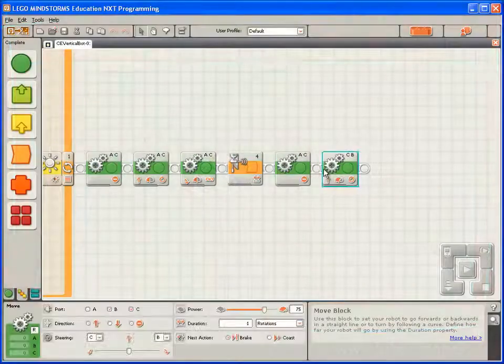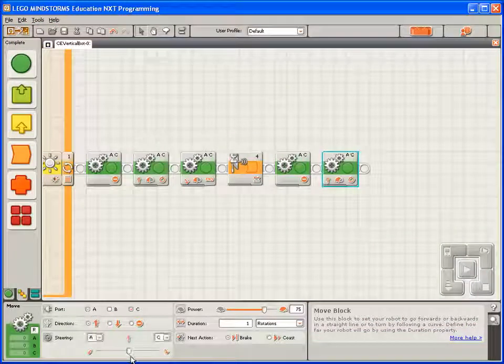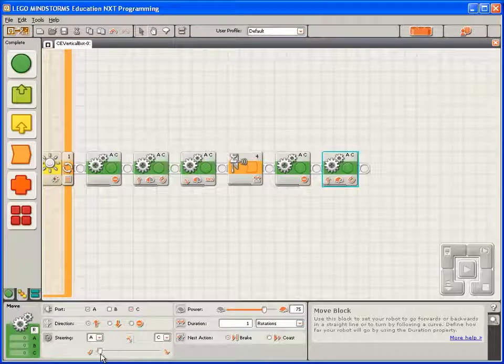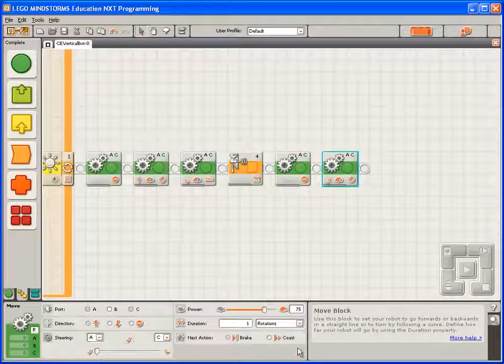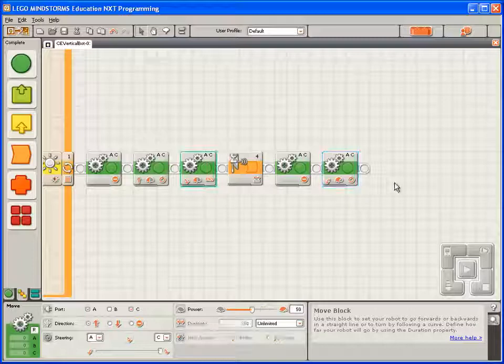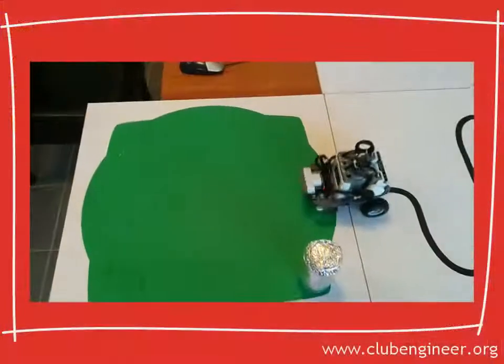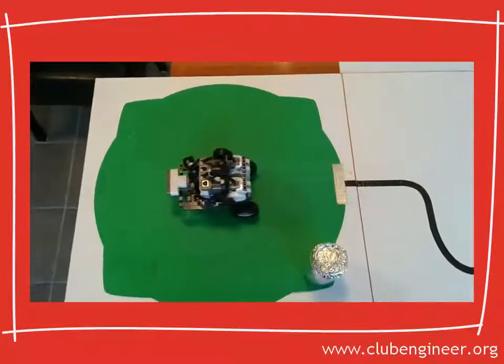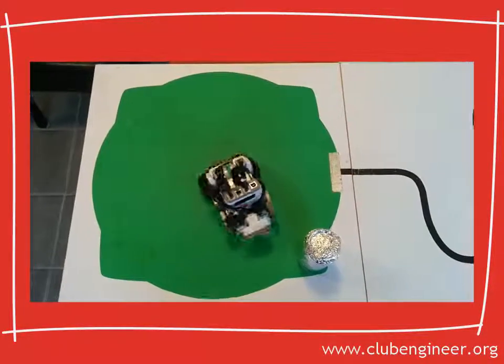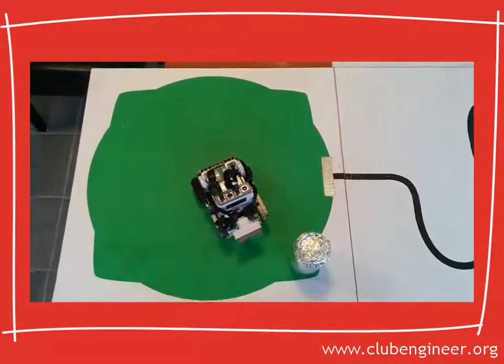We drop down another move block, set it to control motors A and C. This time, we'll crank the turn ratio up the other way. We'll use a power of 50. But we'll only set the motors to turn a little bit, let's say 30 degrees. We'll compile, download and run that. The robot moves to the centre of the chemical spill, rotates until it sees the can, overshoots and moves back.